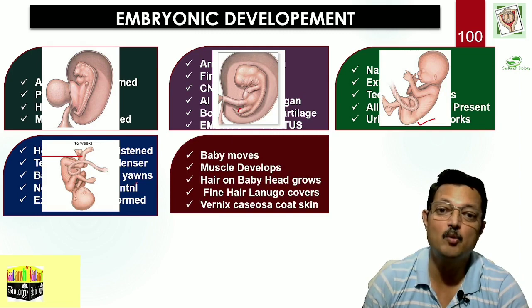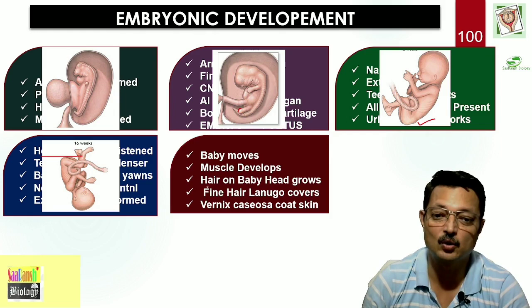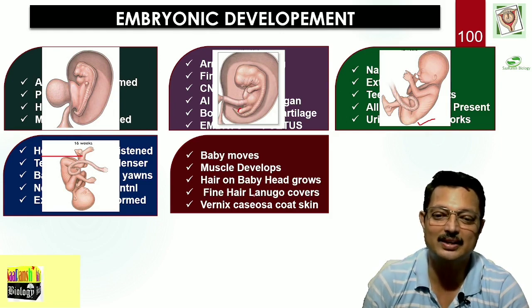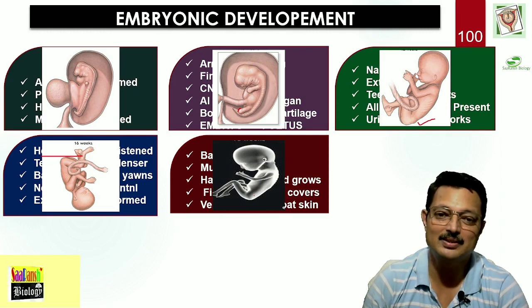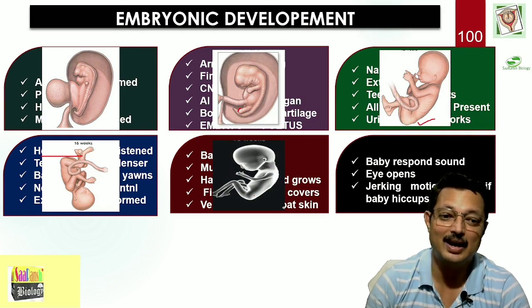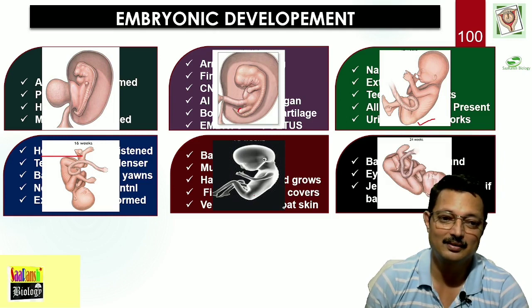Fifth month: baby movements begin, muscle development starts, hair on the baby's head grows, and fine hair called lanugo grows all over the body. A whitish coat called the vernix caseosa coat also appears on the outside. Sixth month: babies respond to sound, the eye opens, jerking movements occur, and the baby even hiccups.